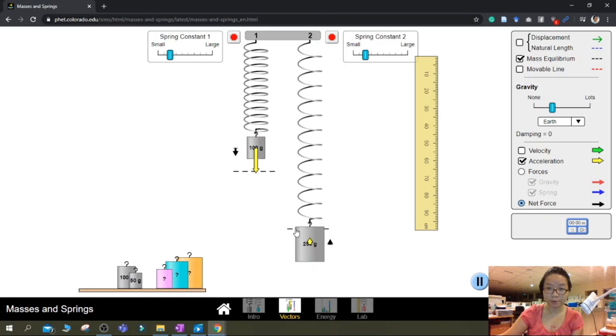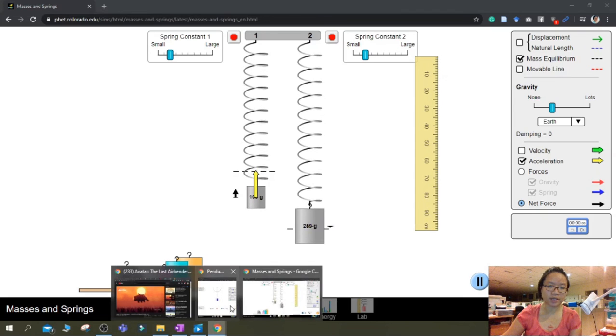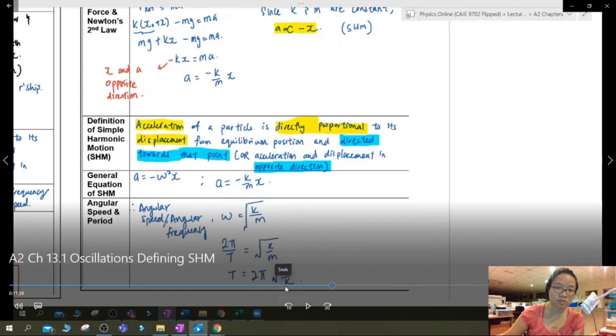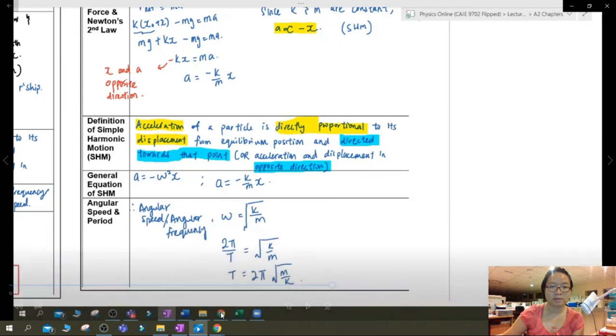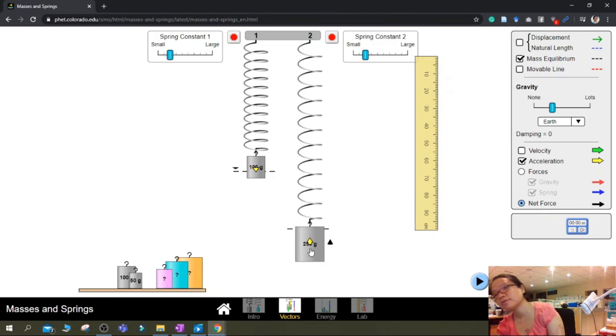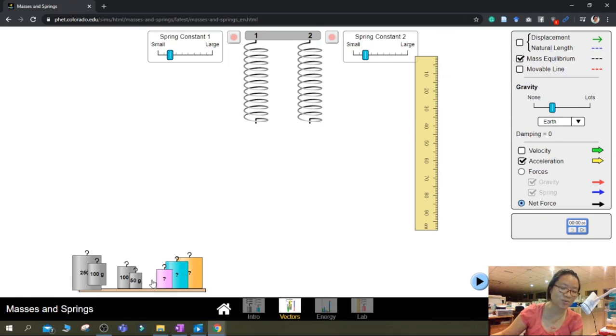So you will notice that with the same spring constant, the 100 gram will obviously accelerate with higher frequency, lower period and then the 250 gram is a slower period. So if you look at the relationship that we have derived here, the larger the m the longer the t which you can tell from this diagram. The larger the m the longer the t.